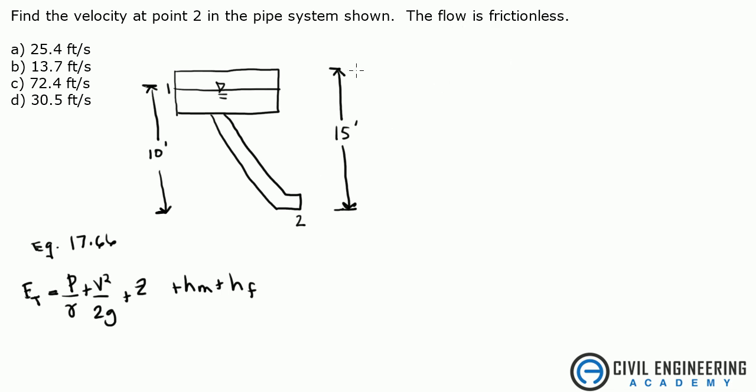Now, because it said the flow is frictionless, we're going to ignore the losses - the head losses due to minor and the head losses due to friction. Minor head losses have to do with bends in the pipe, elbows, 90 degree elbows.